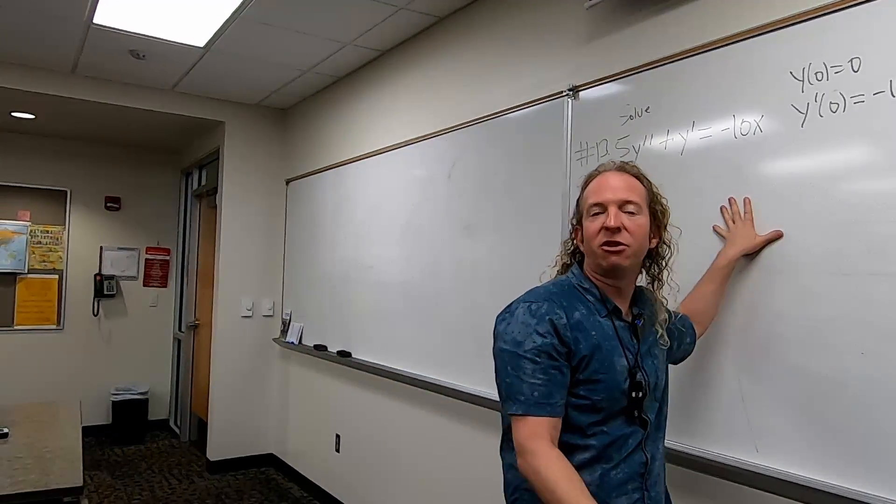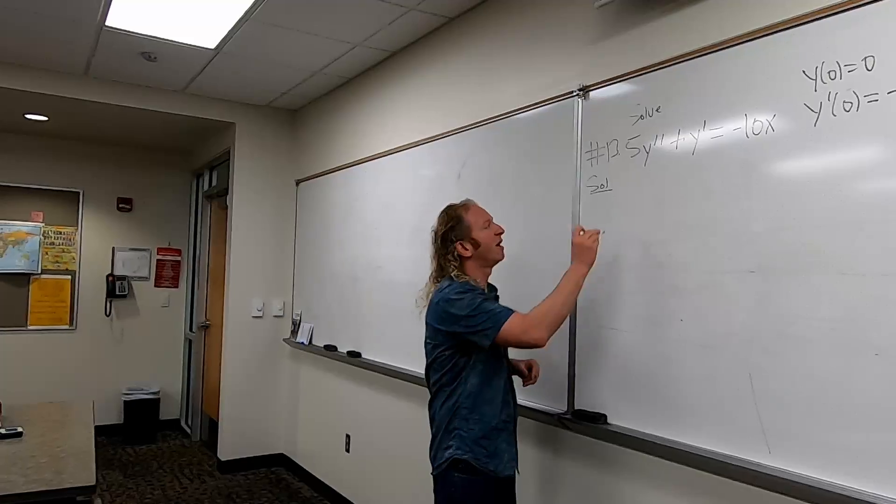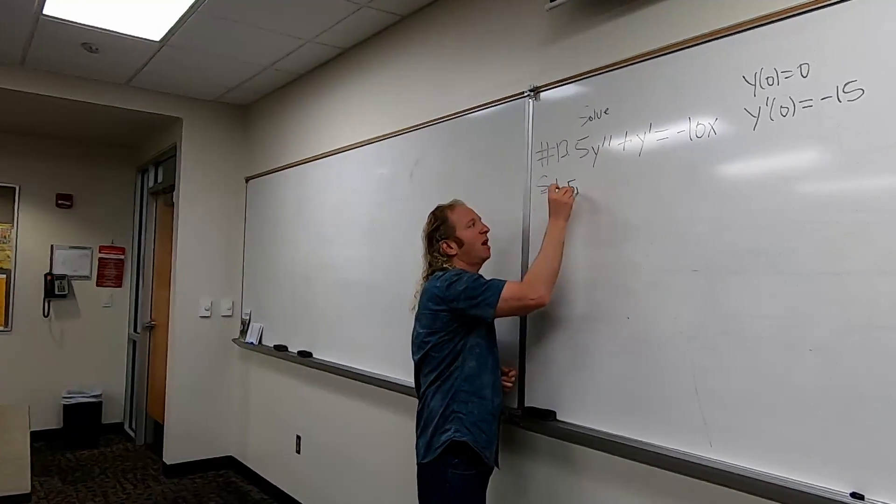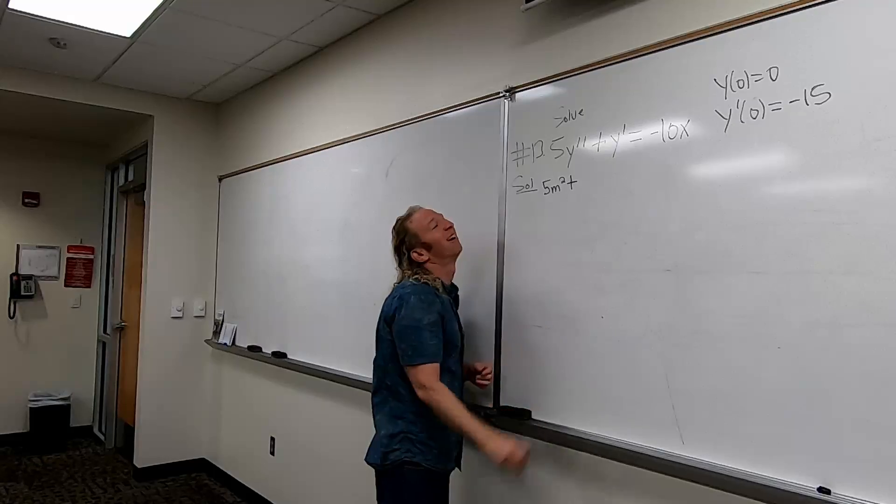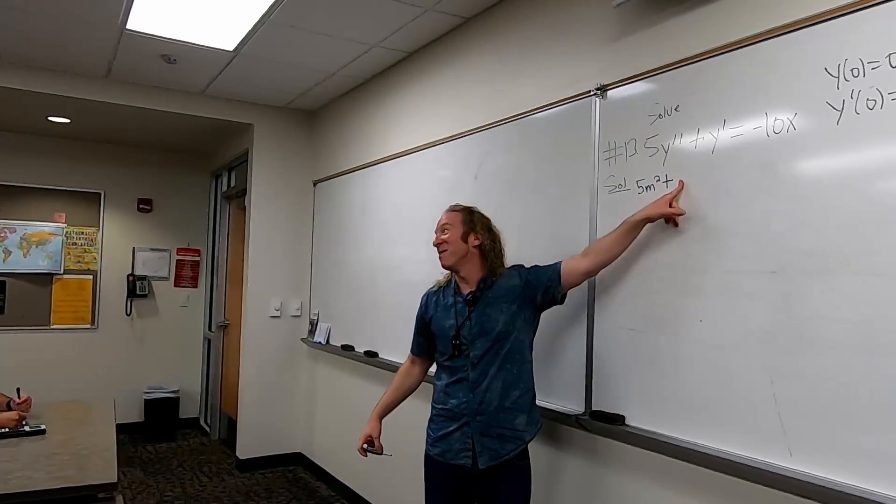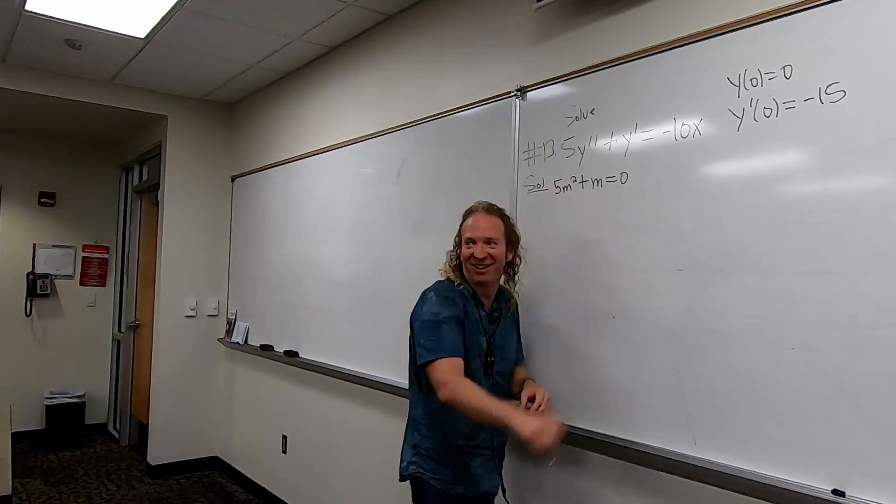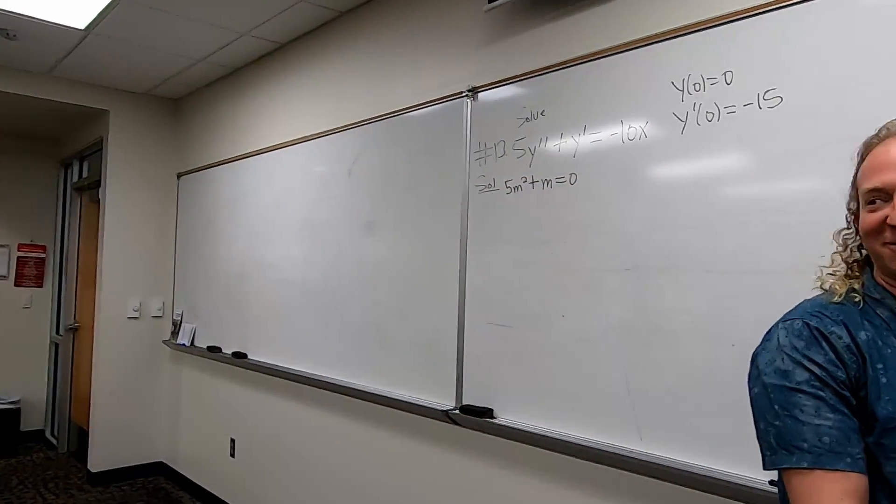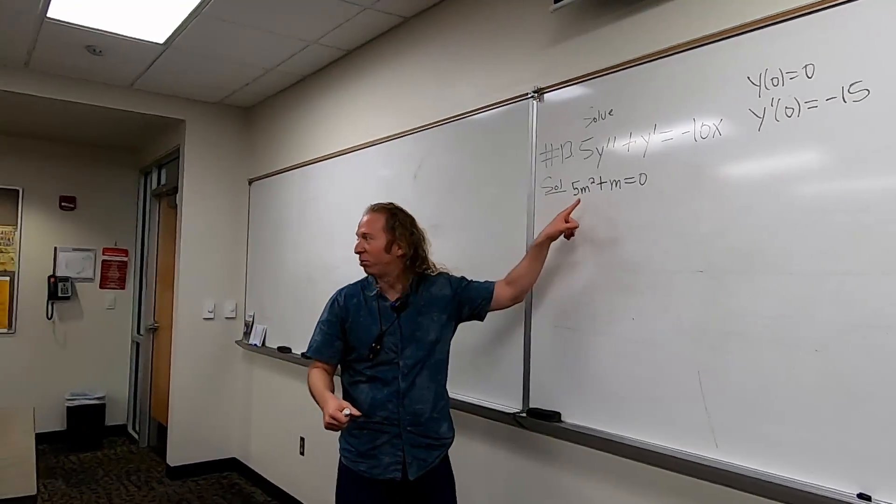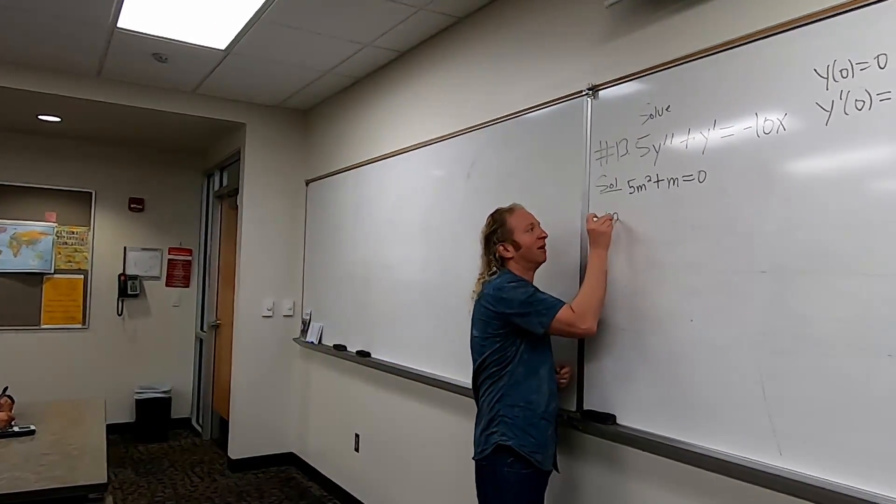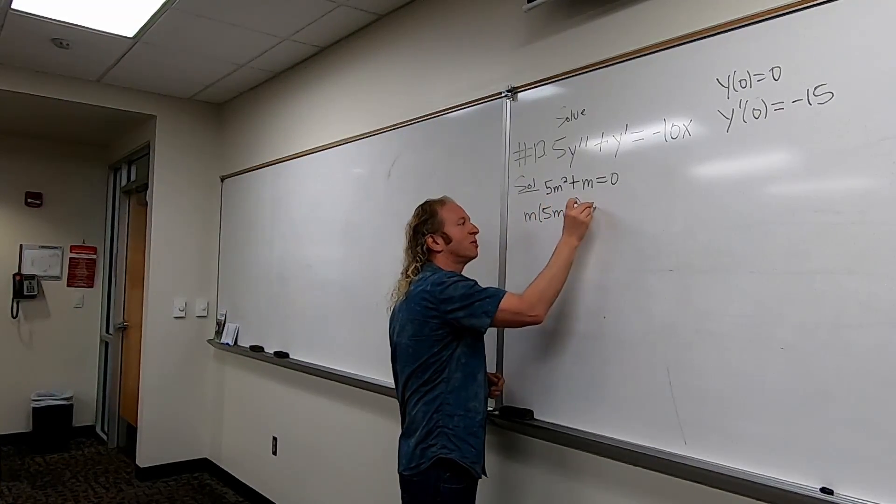So the first step is you pretend it's zero and we find that characteristic or auxiliary equation. So it would be 5m squared plus, I almost messed up, what goes here? M. I almost put a 1 there. Mental mistakes are okay, I guess, as long as they don't come out. And then you can pull out the M. So M times 5m plus 1 equals 0.